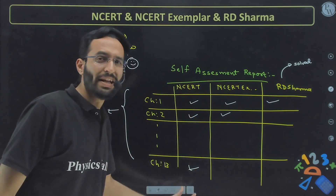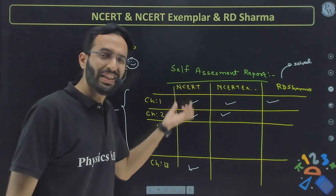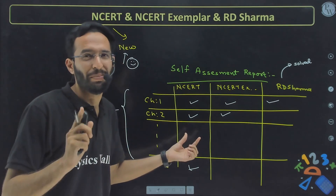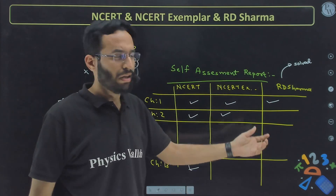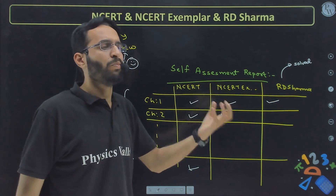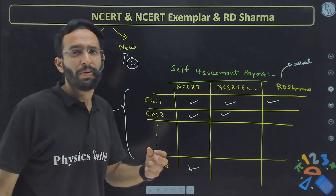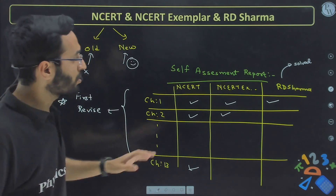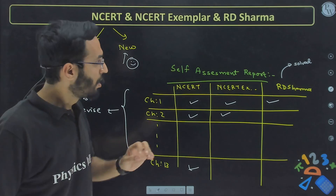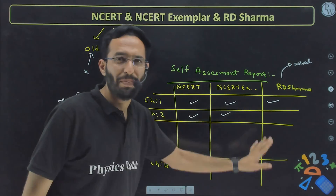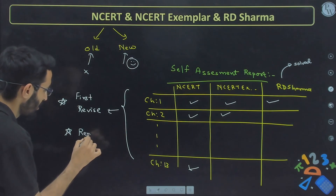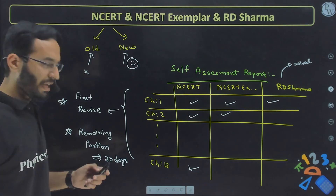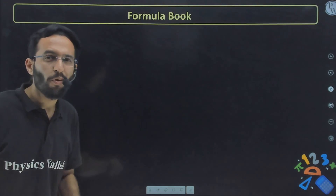If you have studied NCERT and club it with PYQs and sample papers, you can reach 80% in Maths. If you have also read RD Sharma solved questions and add mock tests, practice tests, and sample papers, you can reach 90 to 95%. Now, in the 60 days — spend the first 30 days covering remaining portions, and the next 30 days focus on testing only.